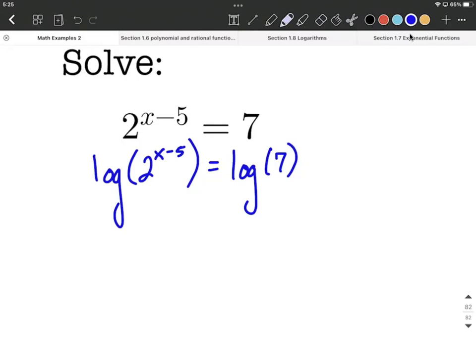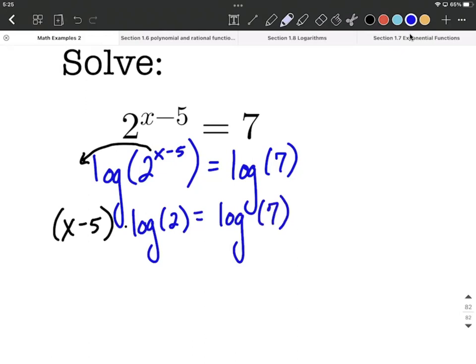The next thing I'm going to do is use one of our logarithmic properties that says we're allowed to move that exponent down in front and make it a multiple. So I can rewrite this as x minus 5 multiplied by the log of 2, and that's going to equal the log of 7.